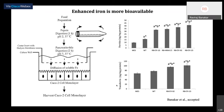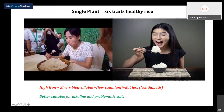To put the whole story simply: we finally have a single rice plant engineered with six traits — higher levels of iron and zinc, more bioavailable iron and zinc, low cadmium, and since the rice has higher iron and zinc, you need to eat less of it, which could reduce diabetes risk. Additionally, the nicotianamine and deoxymugineic acid pathway helps plants grow better in problematic soils. So in total, this is a plant package with six different traits.